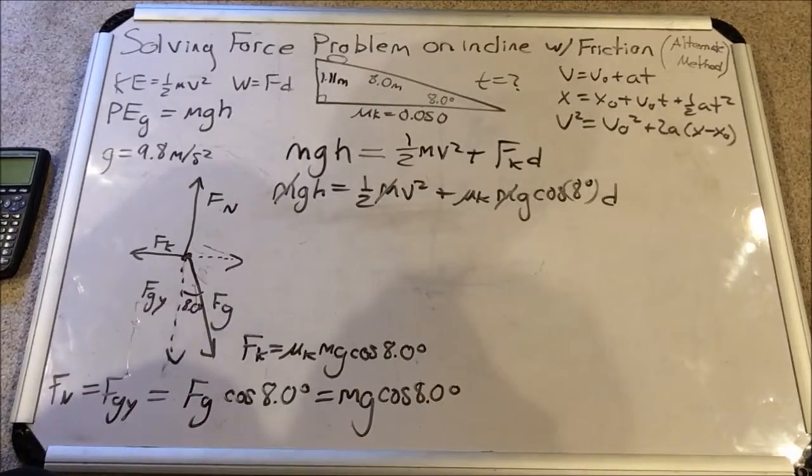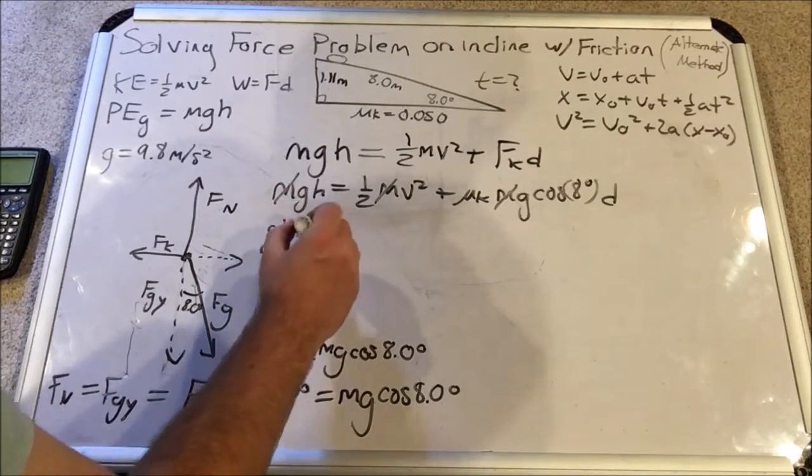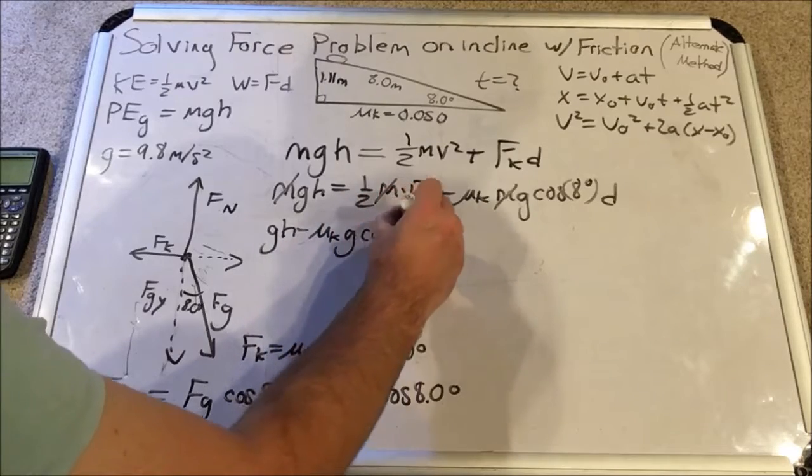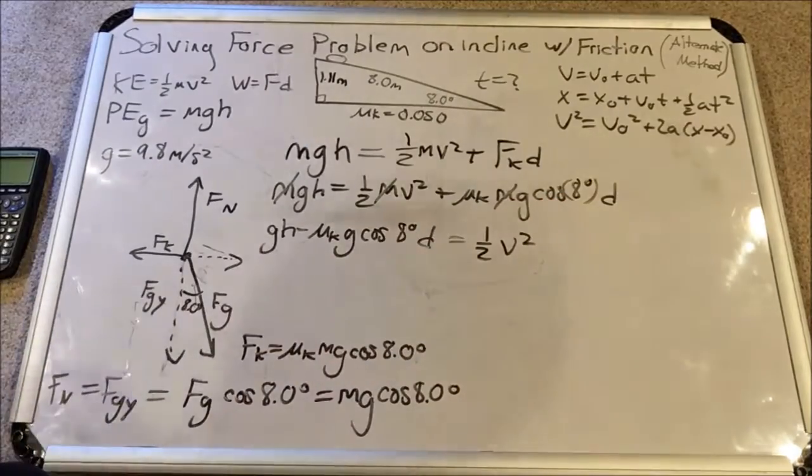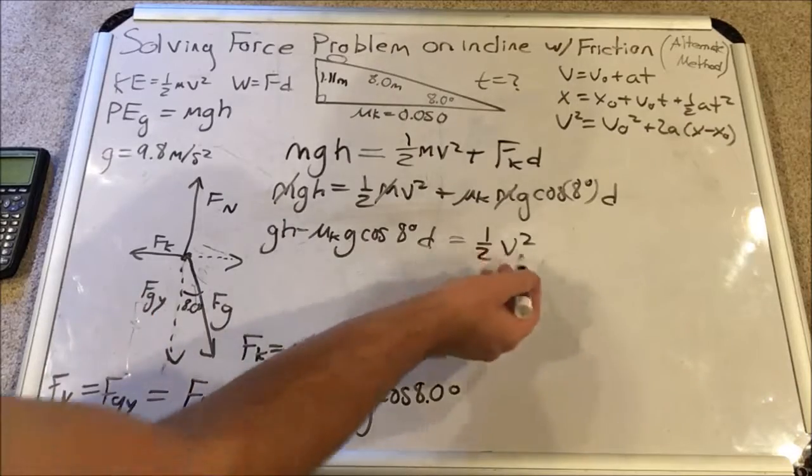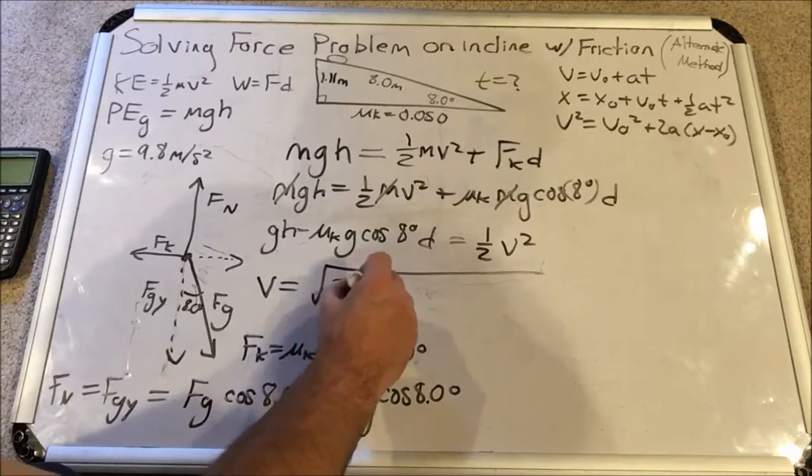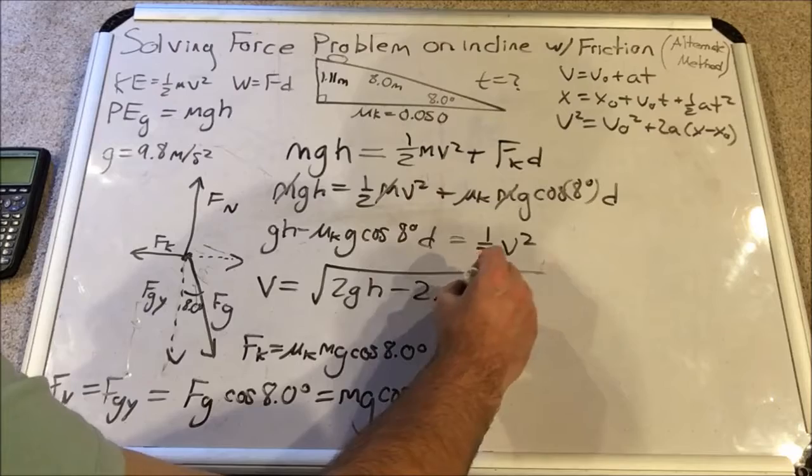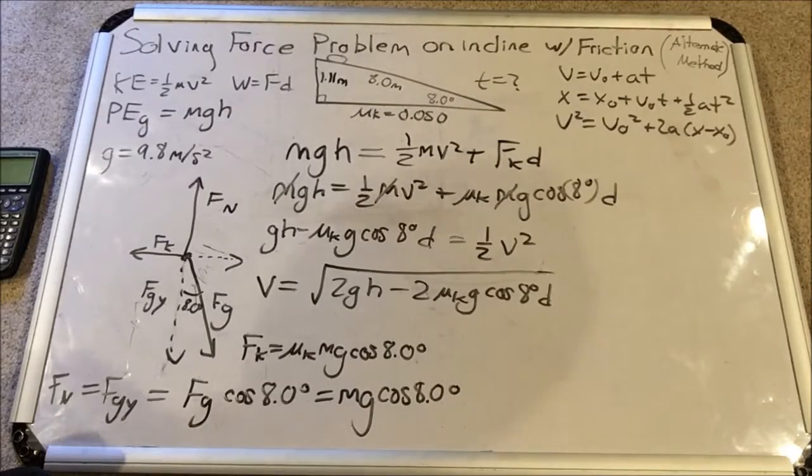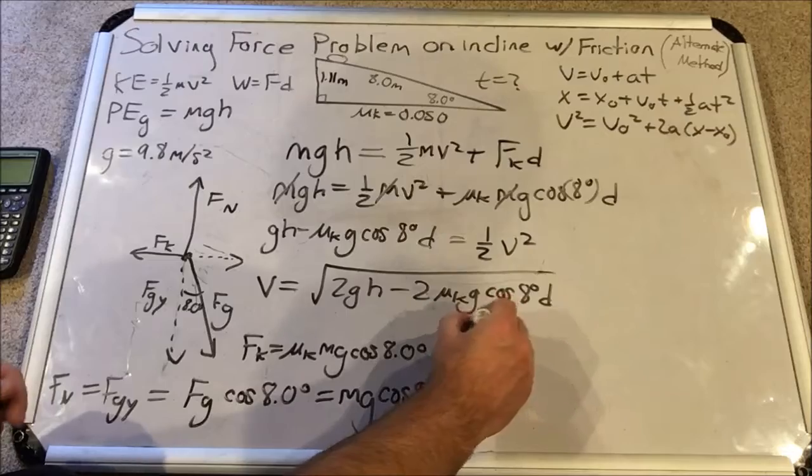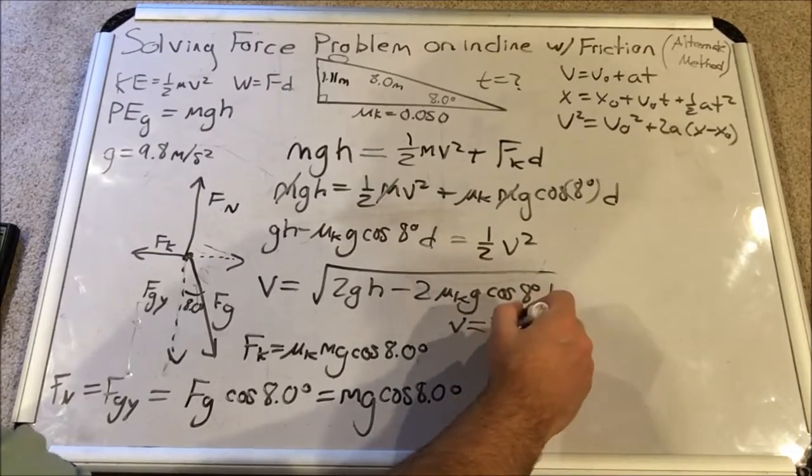So now our job is to get v squared alone. So let's subtract all of this stuff to the other side. So we'll have gh minus mu k g cosine 8 degrees times d equals one half v squared. Okay, so the last step is to multiply by 2 and then square root. So we get that v equals the square root of all of this times 2. So 2gh minus 2 mu k g cosine 8 degrees d. Alright, so now we're going to get that velocity by plugging all this information in. And the velocity is, according to the calculator, 3.74 meters per second.